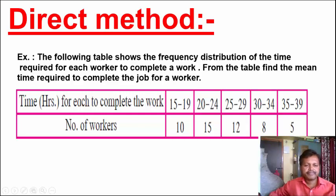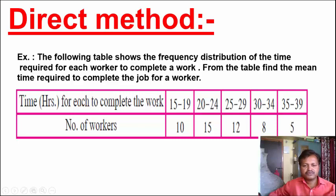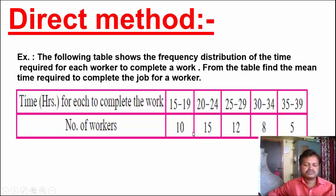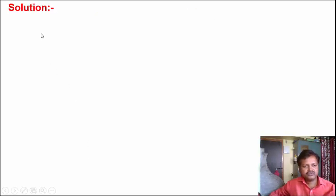In this table, times are given in hours for each worker to complete the work. The first column shows the time (Kalavadi), and the second column shows the number of workers. There are given groups and number of workers. Using this, we solve the example. Solution: